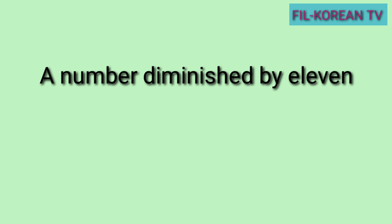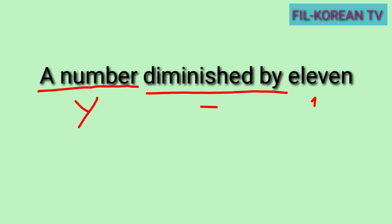Next problem: a number diminished by eleven. Yung a number — ito yung variable. Pwede tayong gumamit ng kahit anong letter dito, gamitin natin yung letter y para sa variable na ito. Then yung diminished by, ibig sabihin ito ay magmaminos — lalagay natin ng subtraction sign. At ang eleven na number. Kung isusulat natin ang phrase na ito sa algebraic expression, ito ay y − 11.